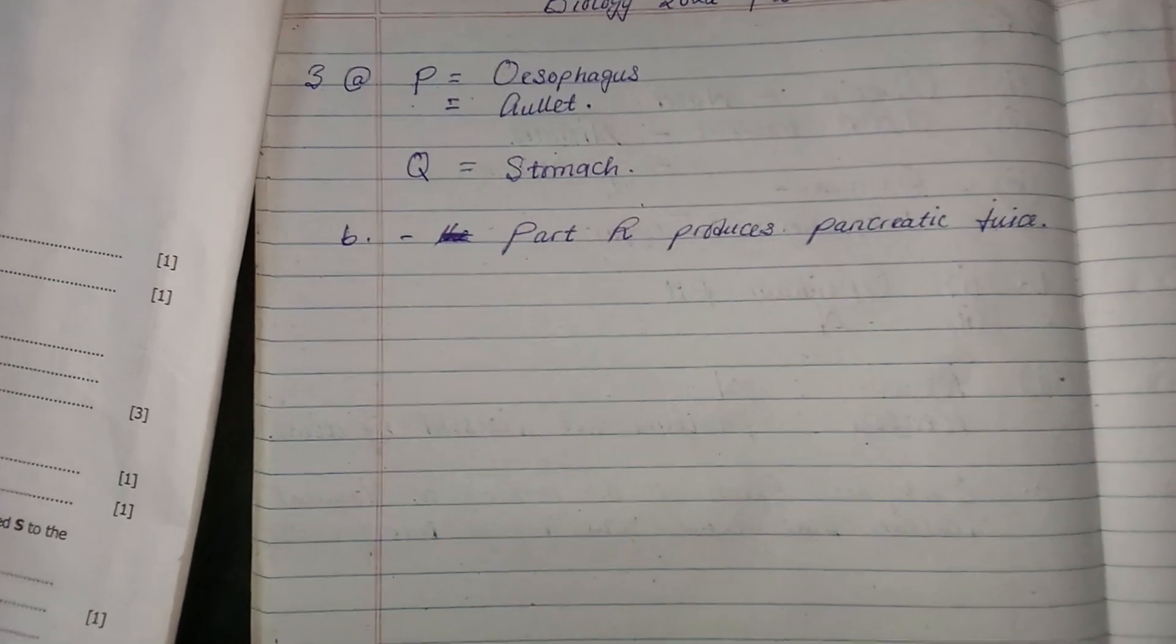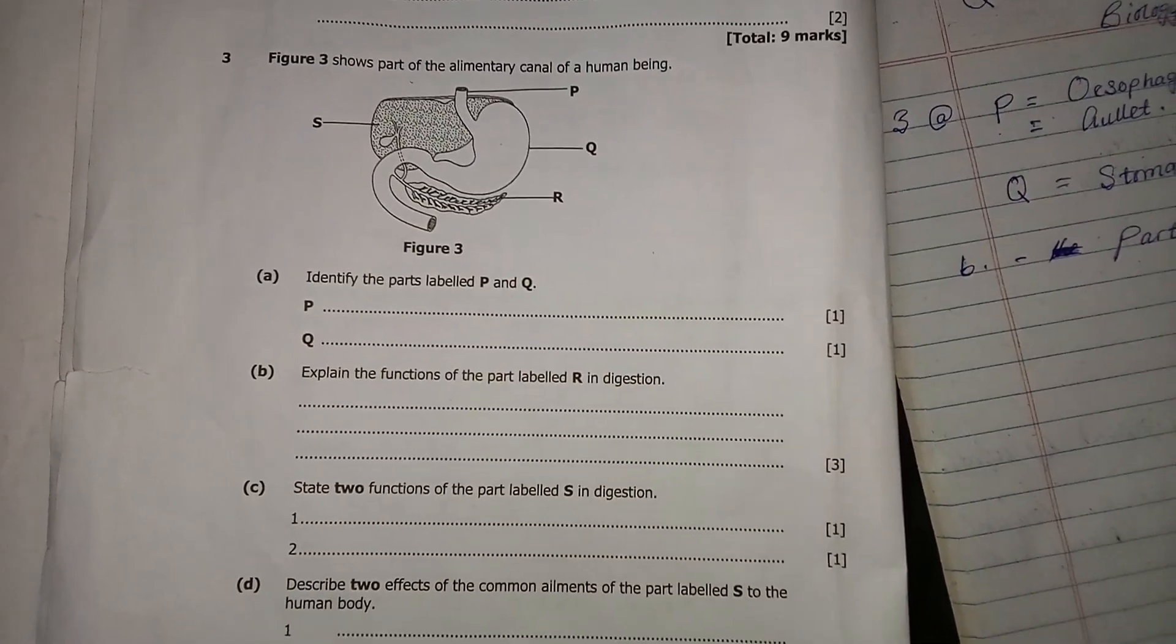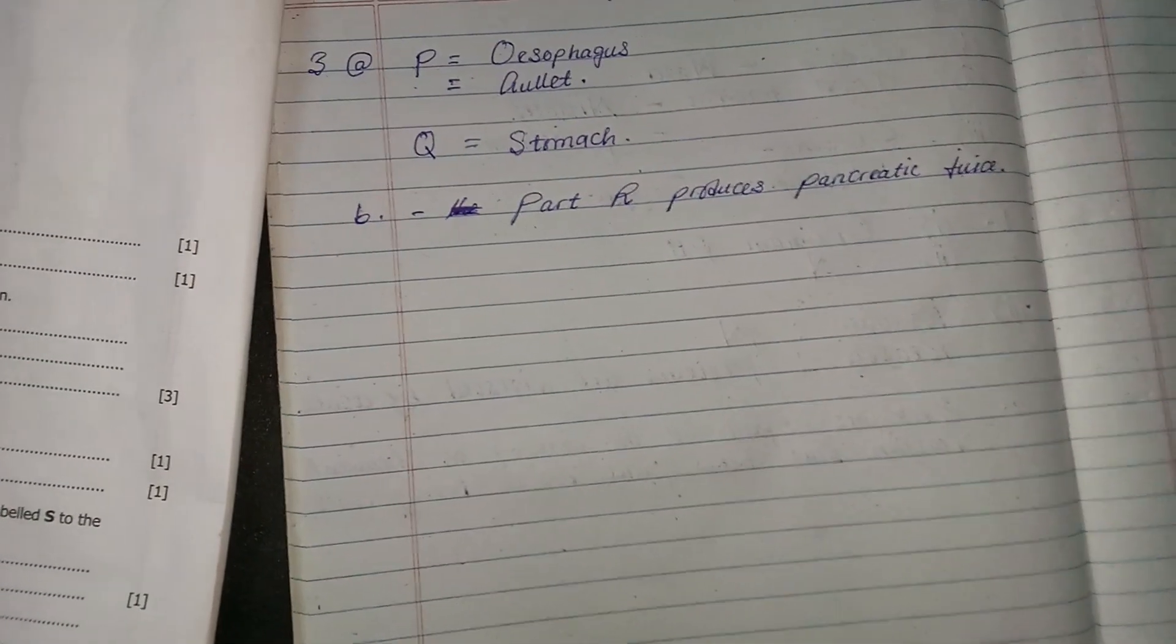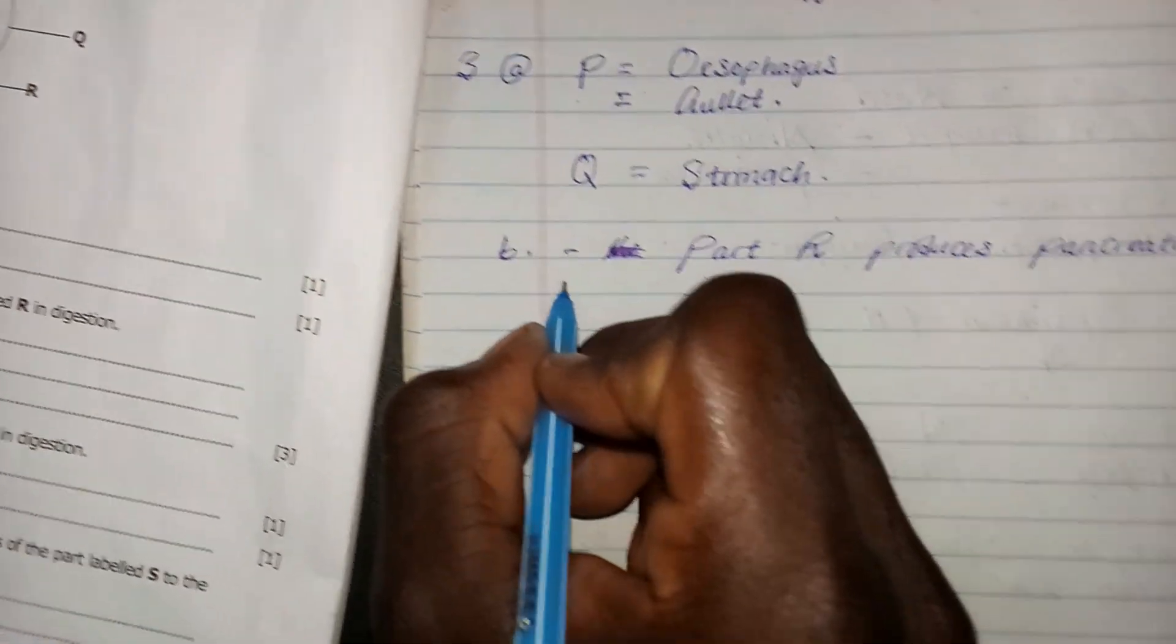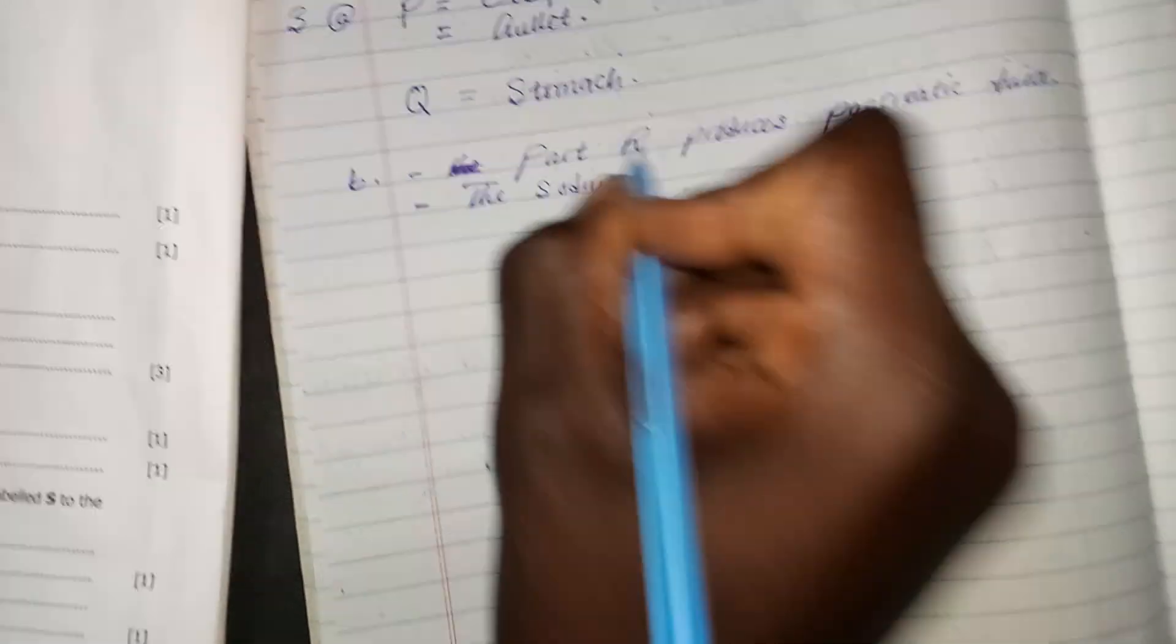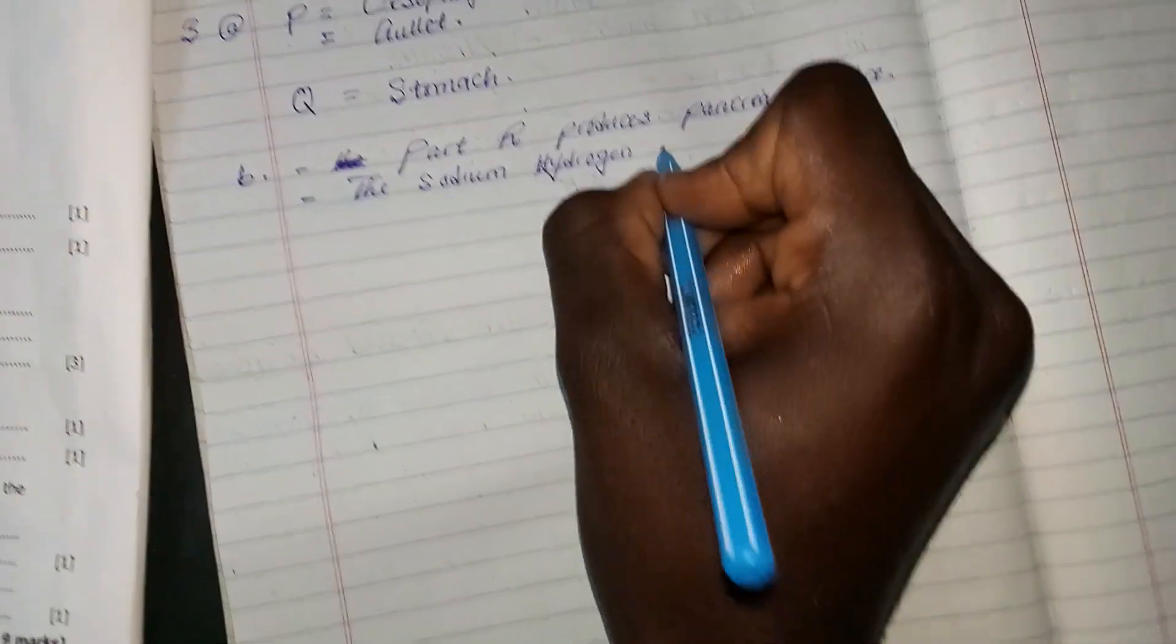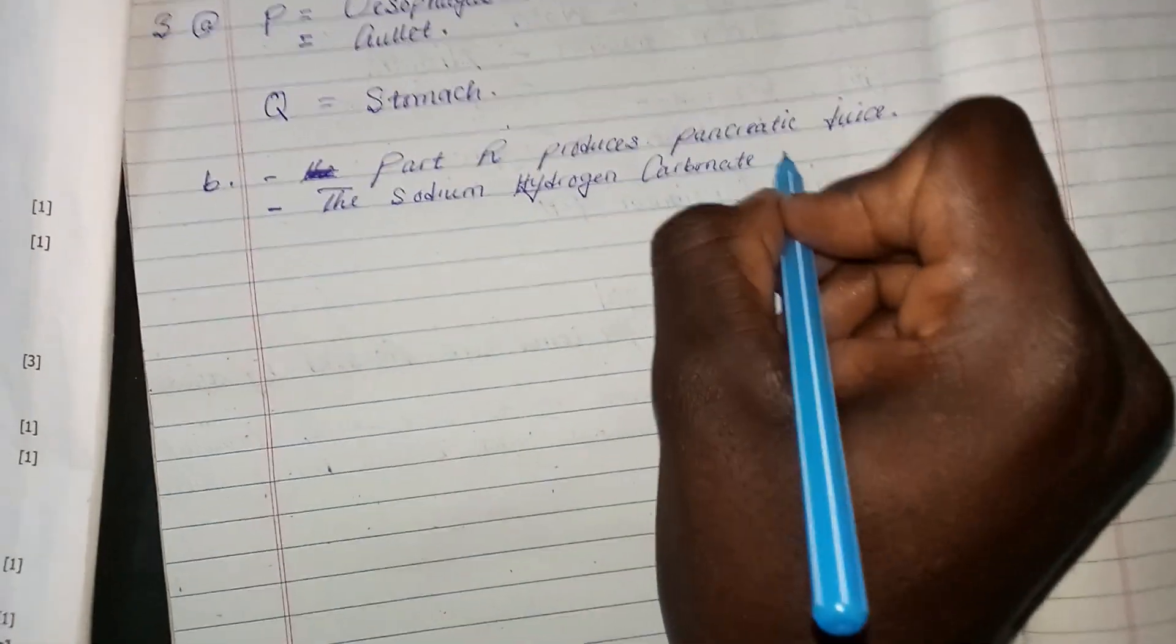So all those things are contained in the pancreatic juice. The other roles played by R are that the sodium hydrogen carbonate neutralizes the acid chyme.